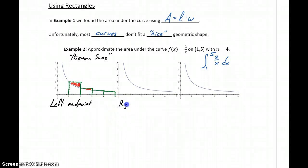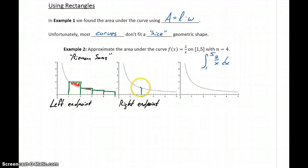Our right endpoint method is very similar. The only thing that changes is we're going to use the right endpoint to create each interval. So that first interval is still from 1 to 2, but we start at the right endpoint — which is 2 — draw a line up until we hit our function, and close that off into a rectangular region. We do the same from 2 to 3, 3 to 4, and 4 to 5, until we have our four rectangular regions.